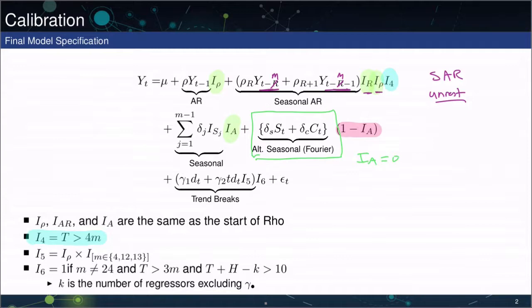So one way or the other, the model is going to allow for some form of additive seasonality, either through dummies in the case the seasonality appears to be strong, or through a first order Fourier expansion if the seasonality appears to be weak or absent.